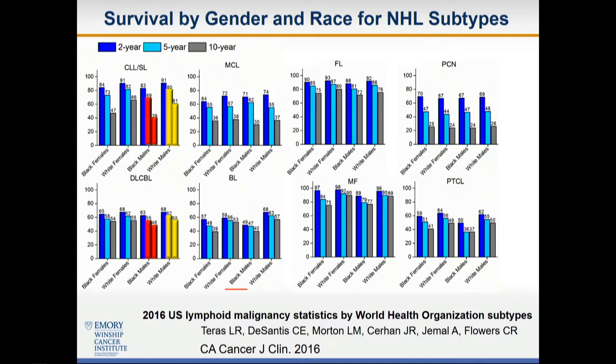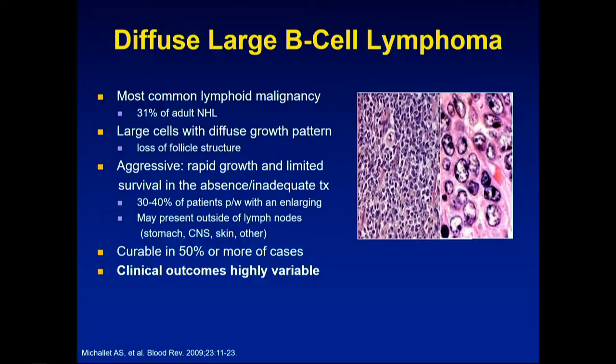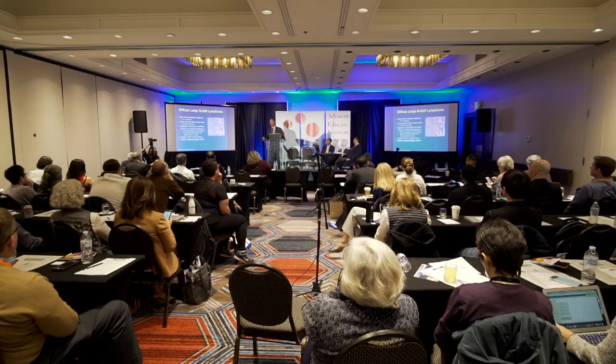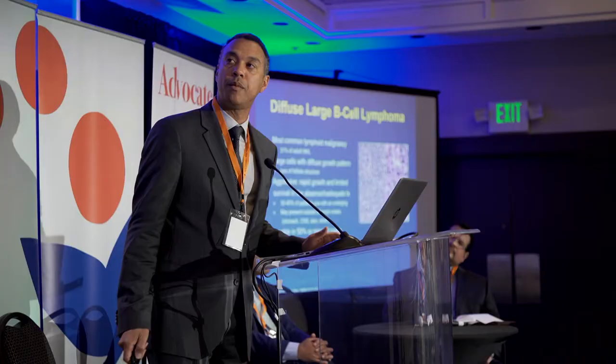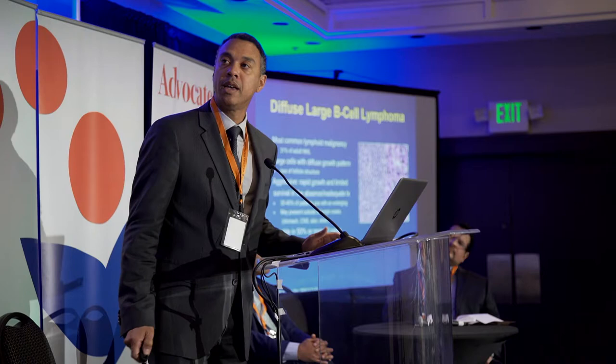I'm going to turn to diffuse large B-cell lymphoma for the rest of this talk as one of those malignancies where we've seen disparities in incidence and outcomes. Diffuse large B-cell lymphoma is the most common lymphoid malignancy. The non-Hodgkin's lymphomas together represent about the seventh most common cancer in the United States, and DLBCL is about 30% of all those.